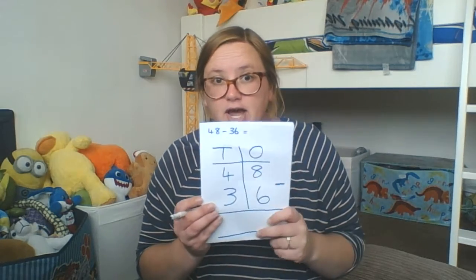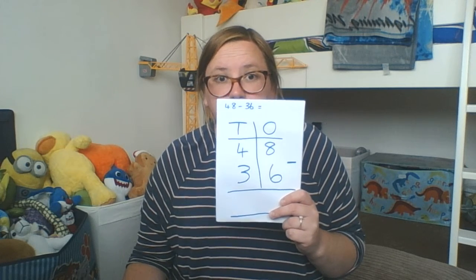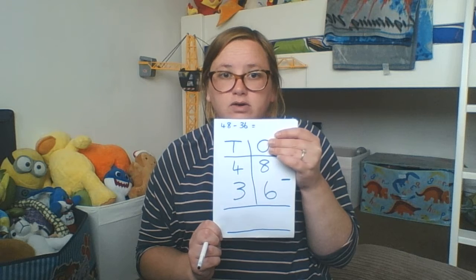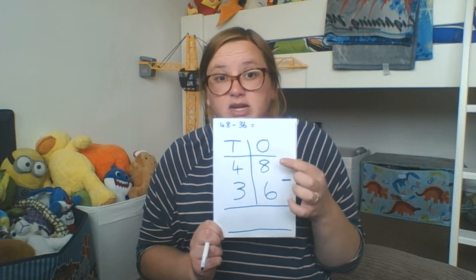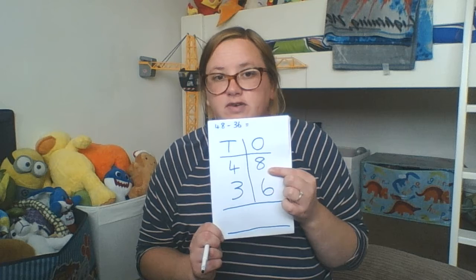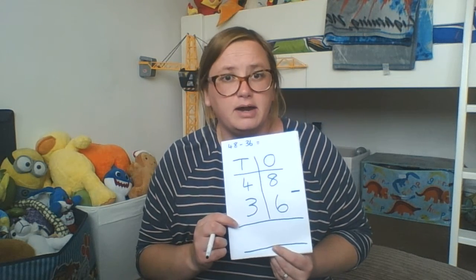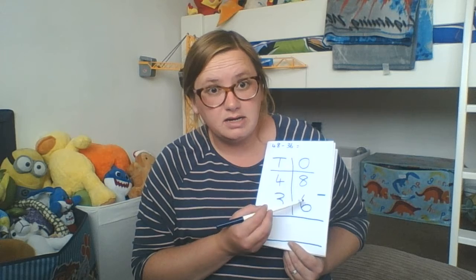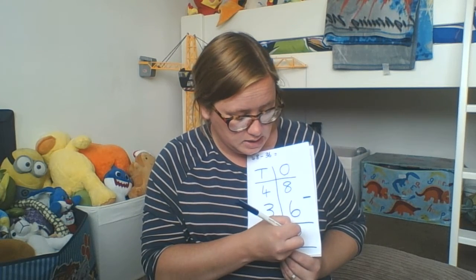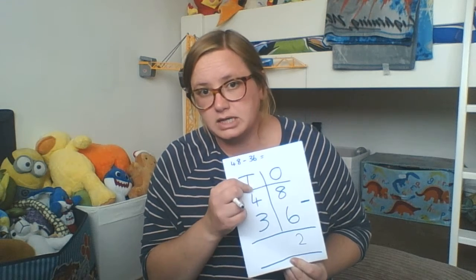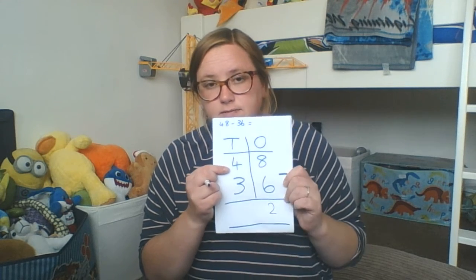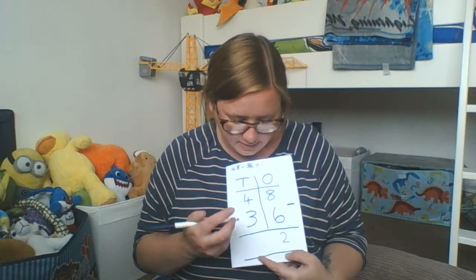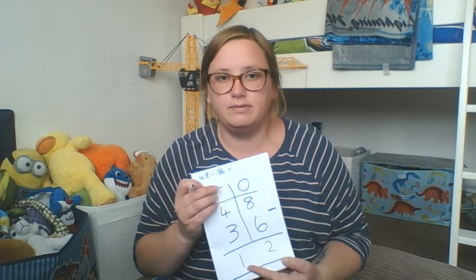Another example we had for subtraction was 48 subtract 36, so I've set it up again — we've got our ones column, our tens column — and we're going to start in our ones column. We've got 8 subtract 6, so I use my number bonds knowledge, or I can count out some things at home to help me. 8 take away 6 is 2. Then we move along to our next column, and that has 4 tens subtract 3 tens, which leaves us with just 1 ten.